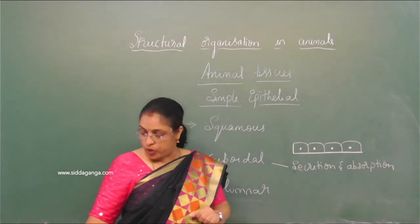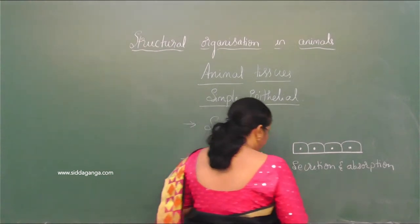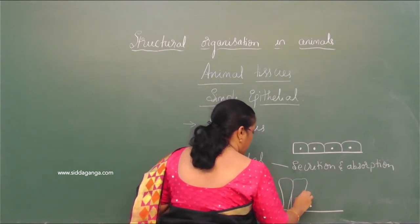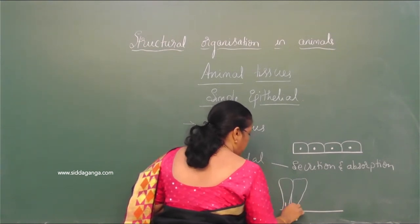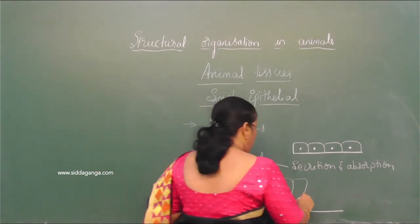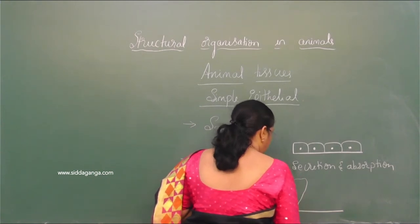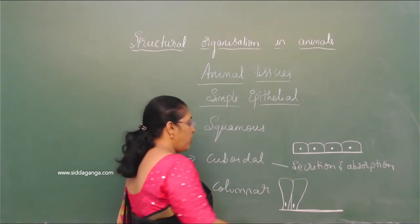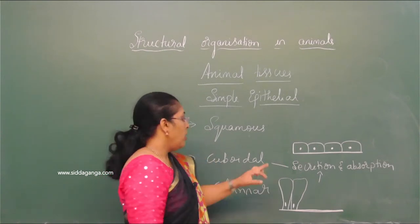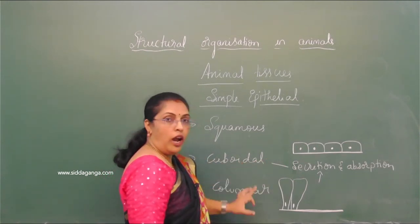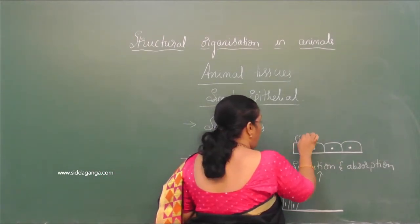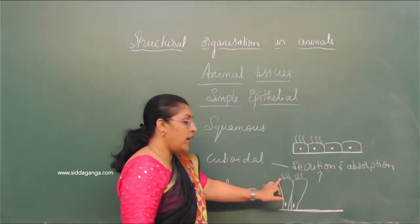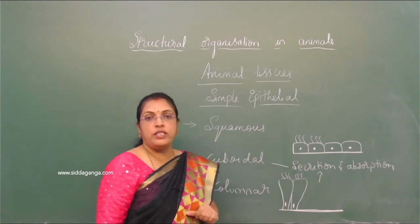Columnar epithelium has column-like cells with an oval nucleus towards the basement membrane. It is seen in the stomach and intestine. Main function is also secretion and absorption. If cuboidal or columnar epithelium bears cilia-like structures on every surface, it is called ciliated cuboidal or ciliated columnar epithelium.